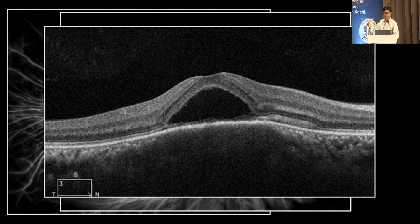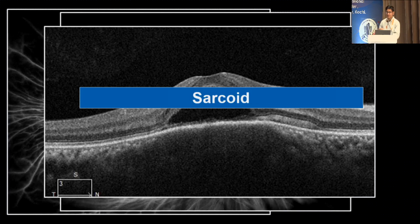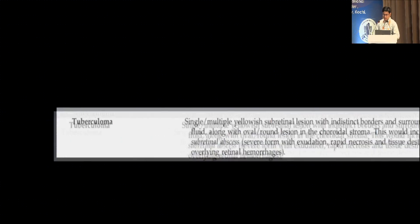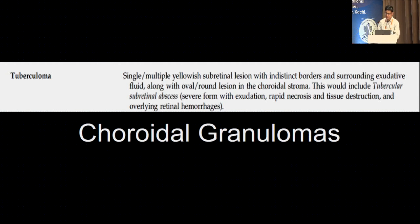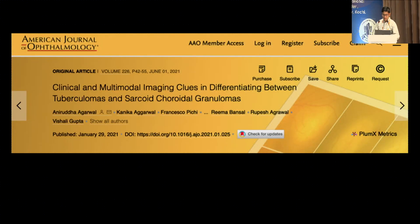The difference: TB patients have intense yellow lesions, lots of fluid, sometimes neovascularization with blood vessels dipping into the lesion. Sarcoid lesions are typically dull yellow, may be multiple and lobulated, with less fluid and less neovascularization. Regarding choroidal granulomas — TB granulomas are a challenge because they could be confused with metastasis, masses, or subretinal abscesses — where you have exudation, necrosis, and tissue destruction. We did some work on differentiating TB and sarcoid granulomas.